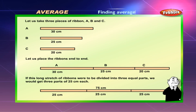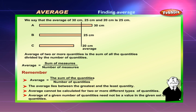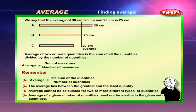To find the average of two or more quantities, let us take three pieces of ribbon A, B, and C. A is 30 centimeters long, B is 25 centimeters long, and C is 20 centimeters long. If we place the ribbons end-to-end and divide this long stretch into three equal parts, we get three parts of 25 centimeters each. So the average of 30 cm, 25 cm, and 20 cm is 25 centimeters.